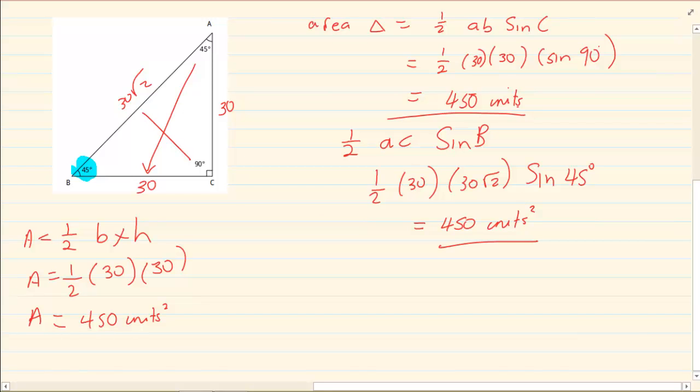Now the reason I am doing these three different styles is so that you can see that this rule works. Your standard rule that you have learnt was area is equal to half base times height. Now using these rules will give you the same answer. Why would we use these rules?